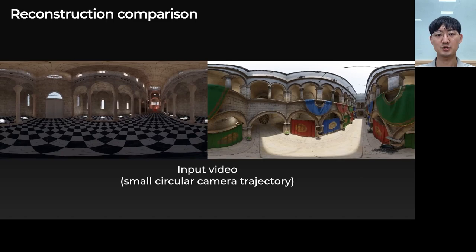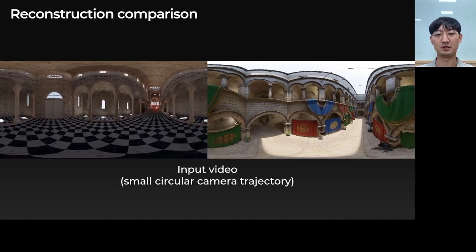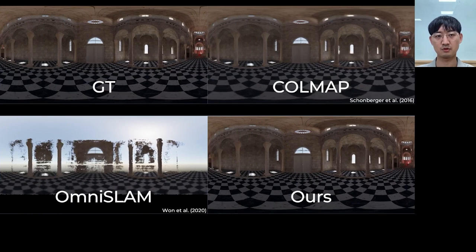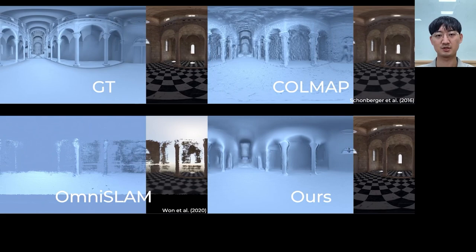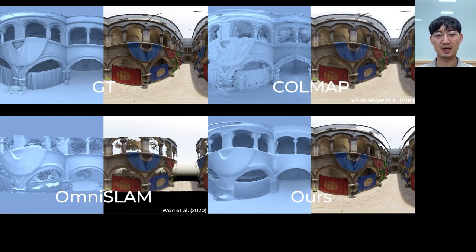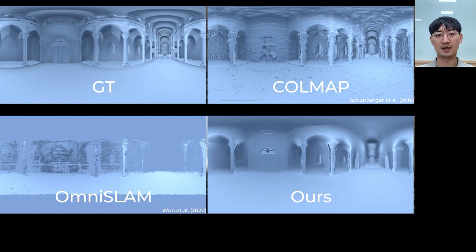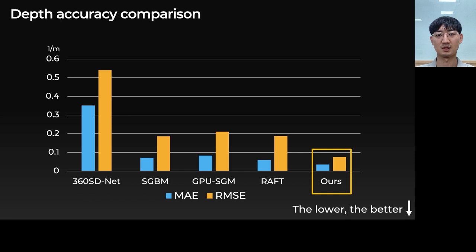We are now showing the synthetic reconstruction results. These are input videos rendered with a small camera trajectory. We compare the reconstruction accuracy with the ground truth, Colmap, and OmniSLAM. Colmap's reconstruction result has many bumpy artifacts, and OmniSLAM has a limited reconstruction range while our method can output a full 3D mesh. Our method outputs smoother and more accurate results than other methods.